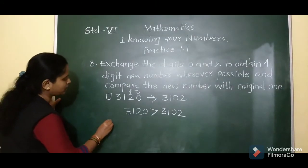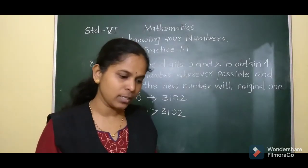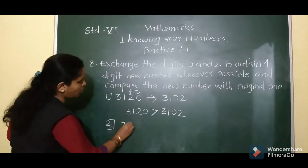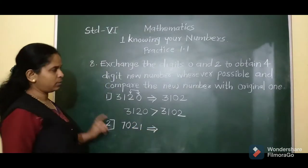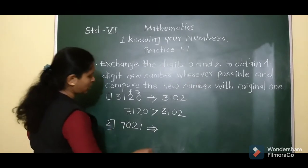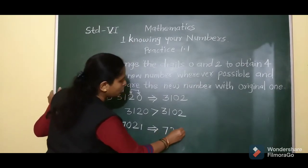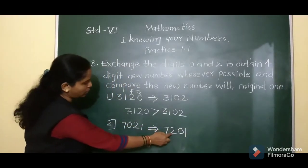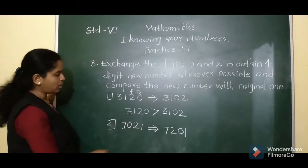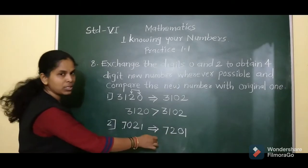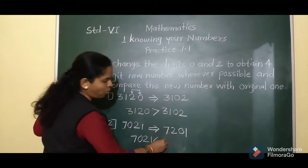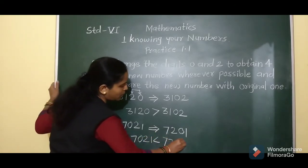The second number is 7,021. We exchange digits 0 and 2. The new number formed is 7,201. Comparing: the first digit is the same. Looking at the second digit — original has 0 and the new number has 2. Since 2 is greater than 0, the new number 7,201 is greater than the original 7,021.